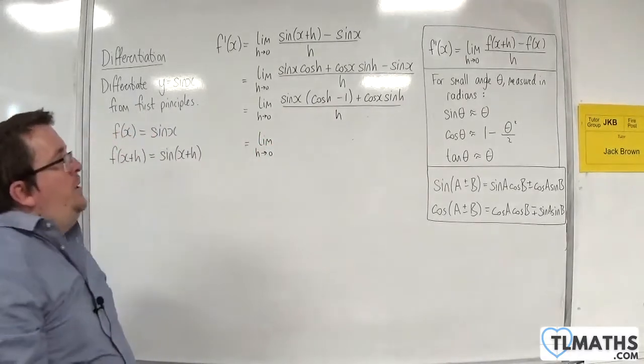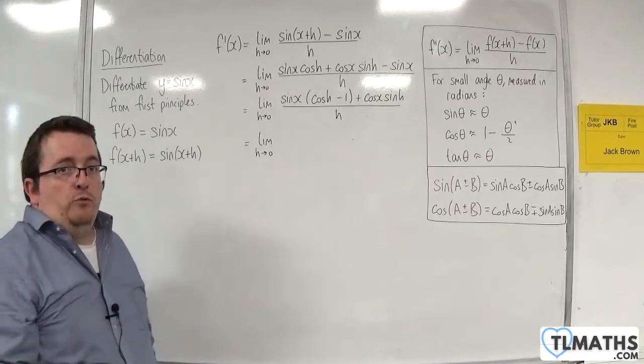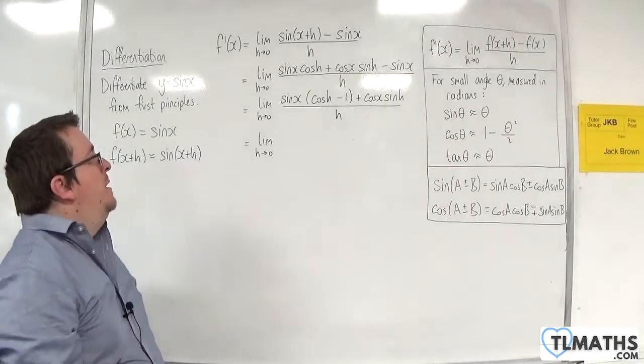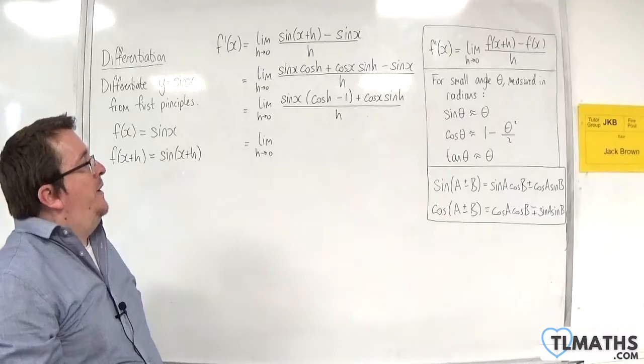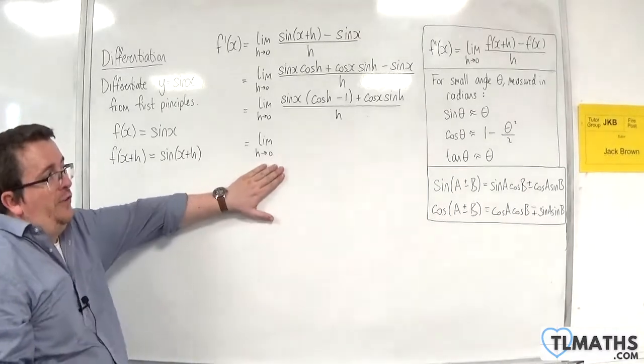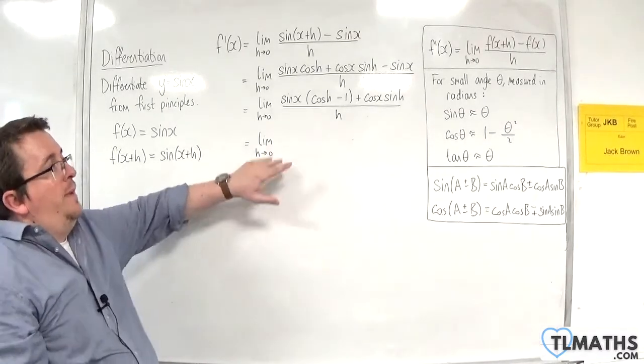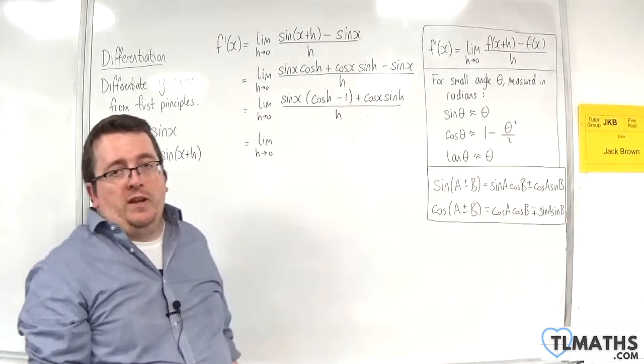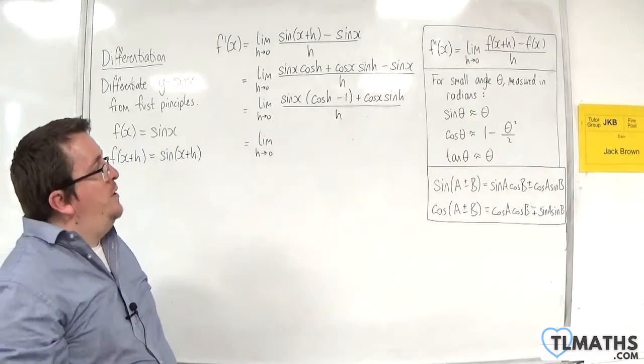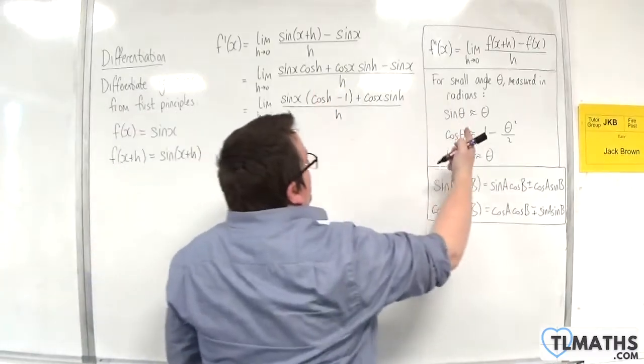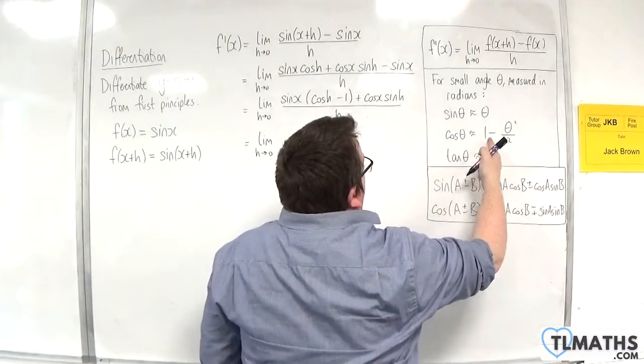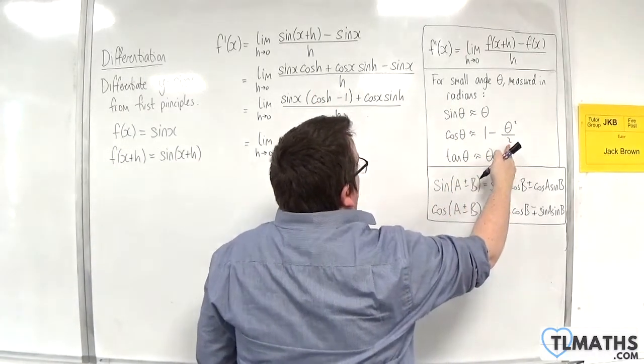Now h is getting smaller and smaller and smaller. In which case, as it is getting smaller and smaller and smaller and closer to 0, that means the small angle approximations are going to come into effect. So cos of h will get closer and closer and closer to 1 take away h squared over 2.